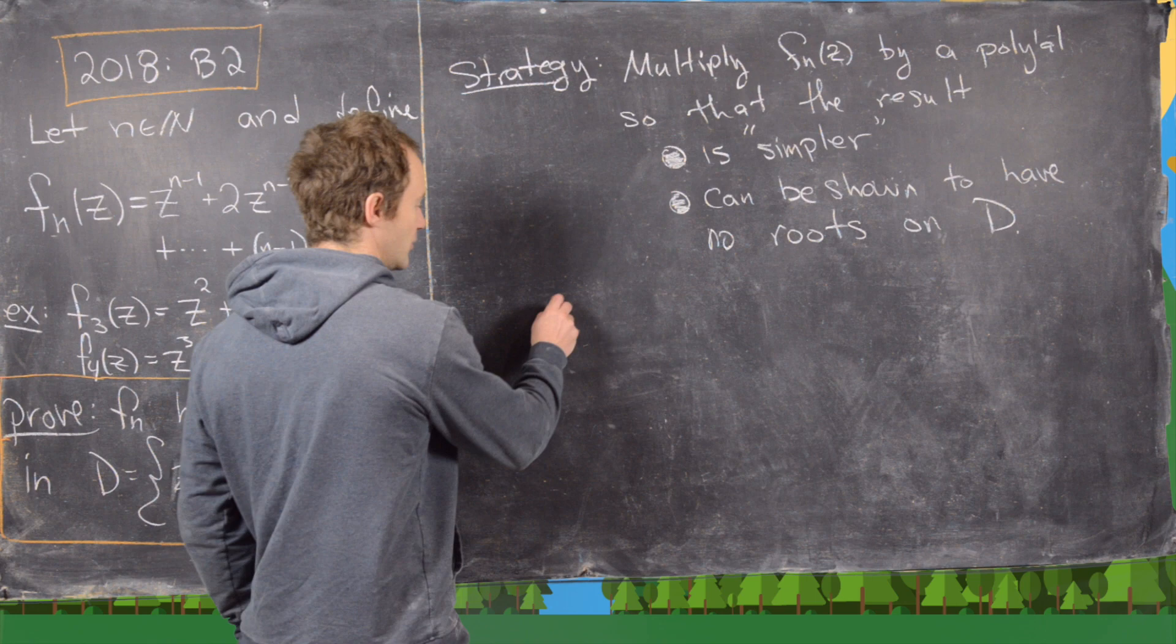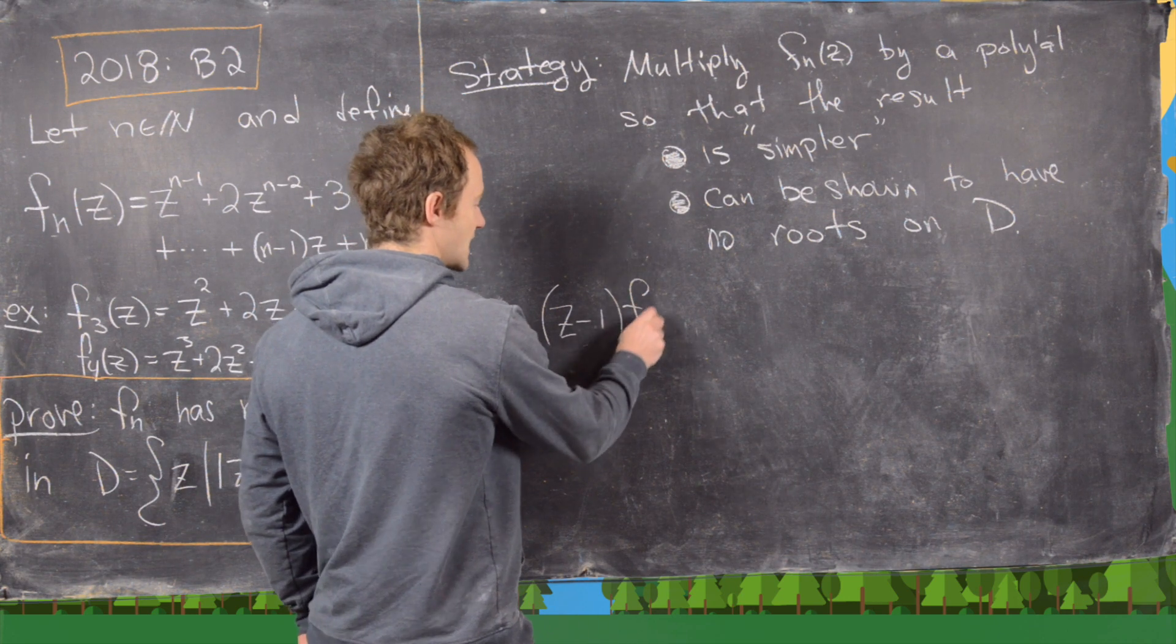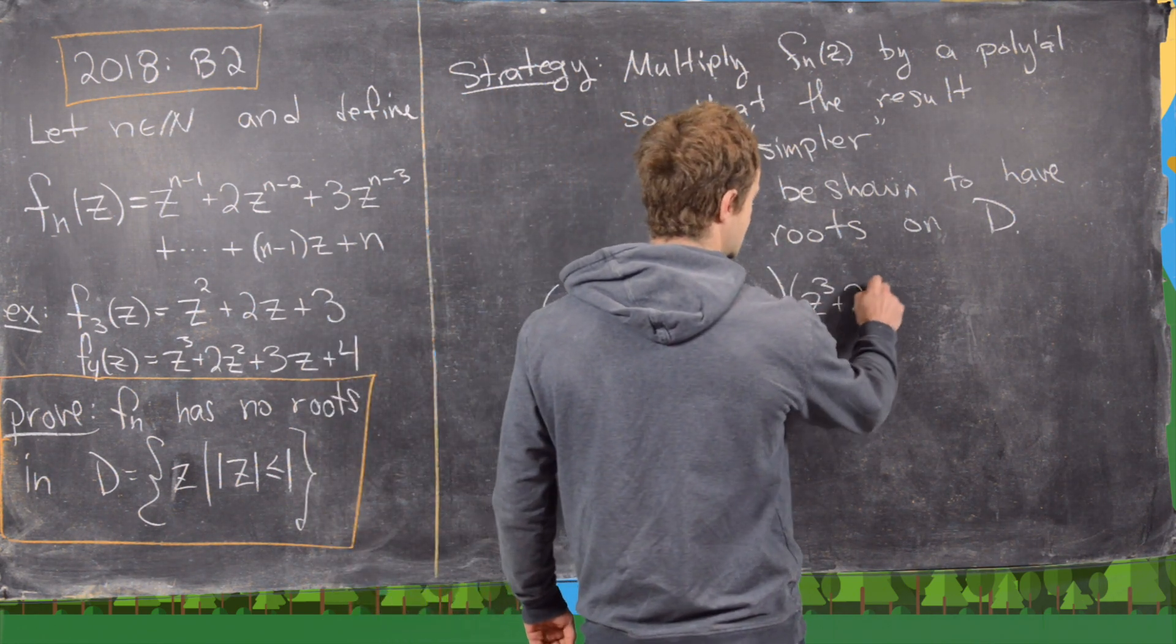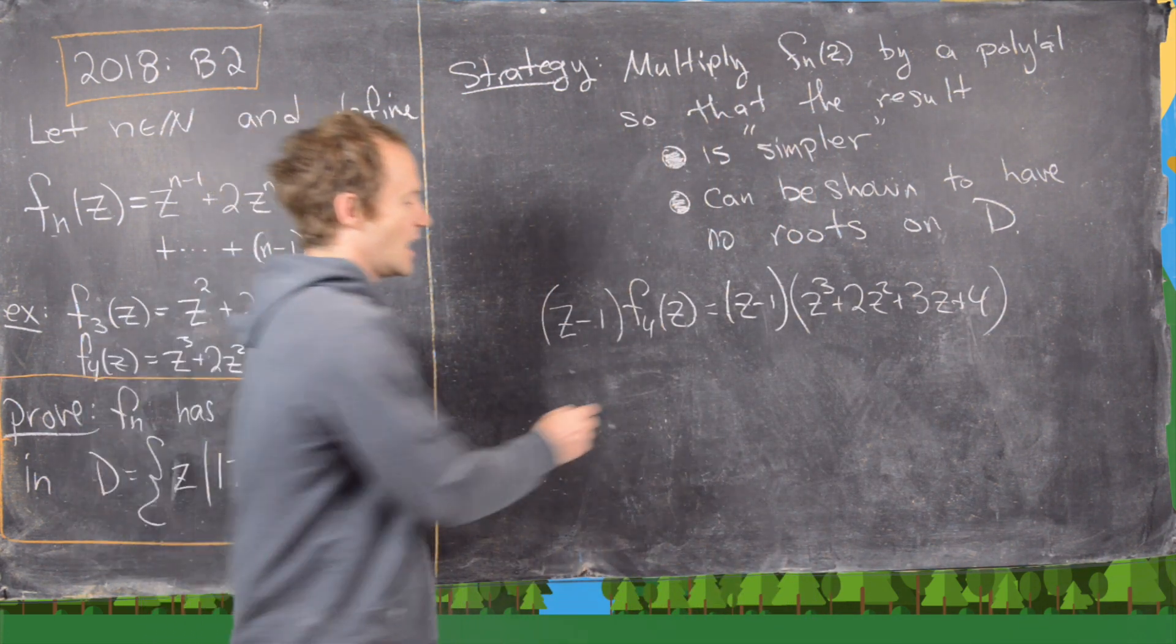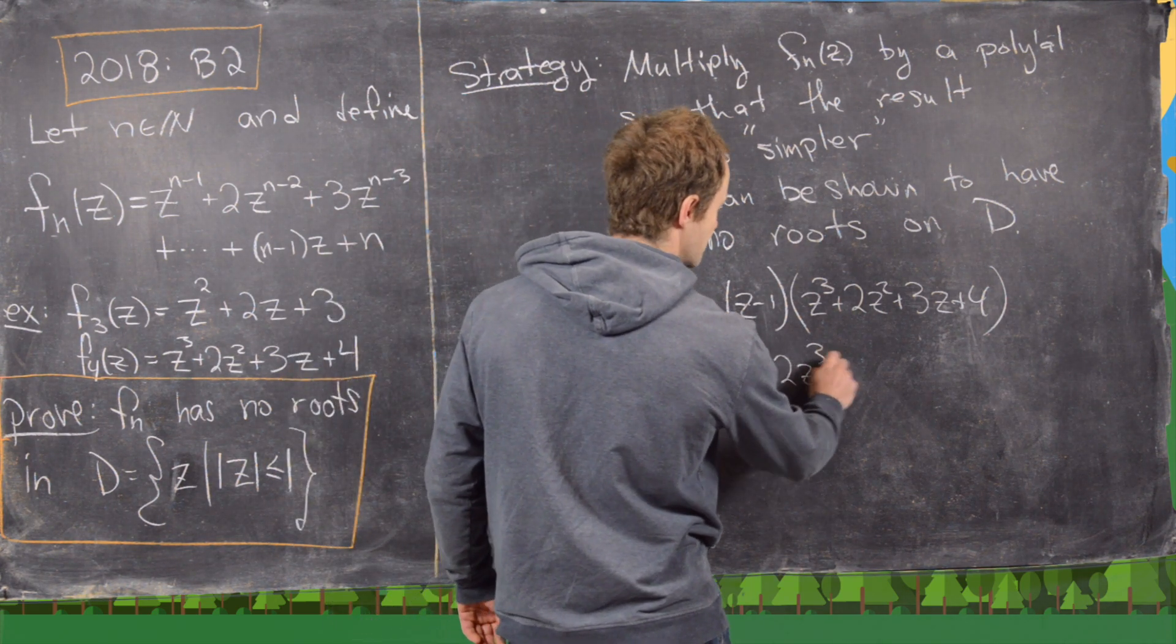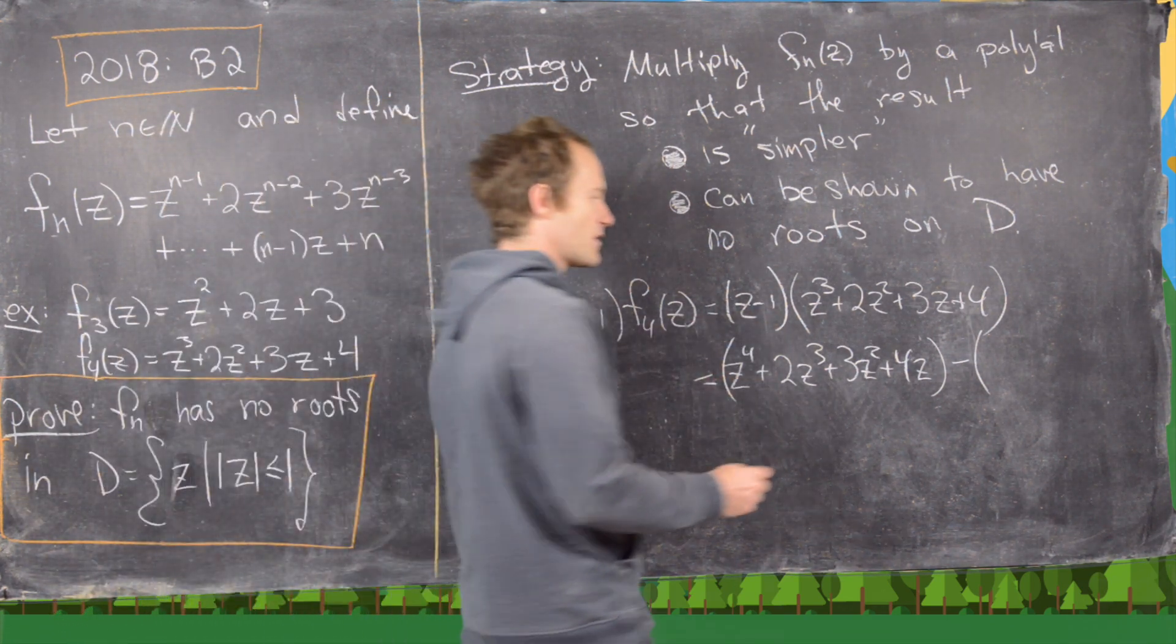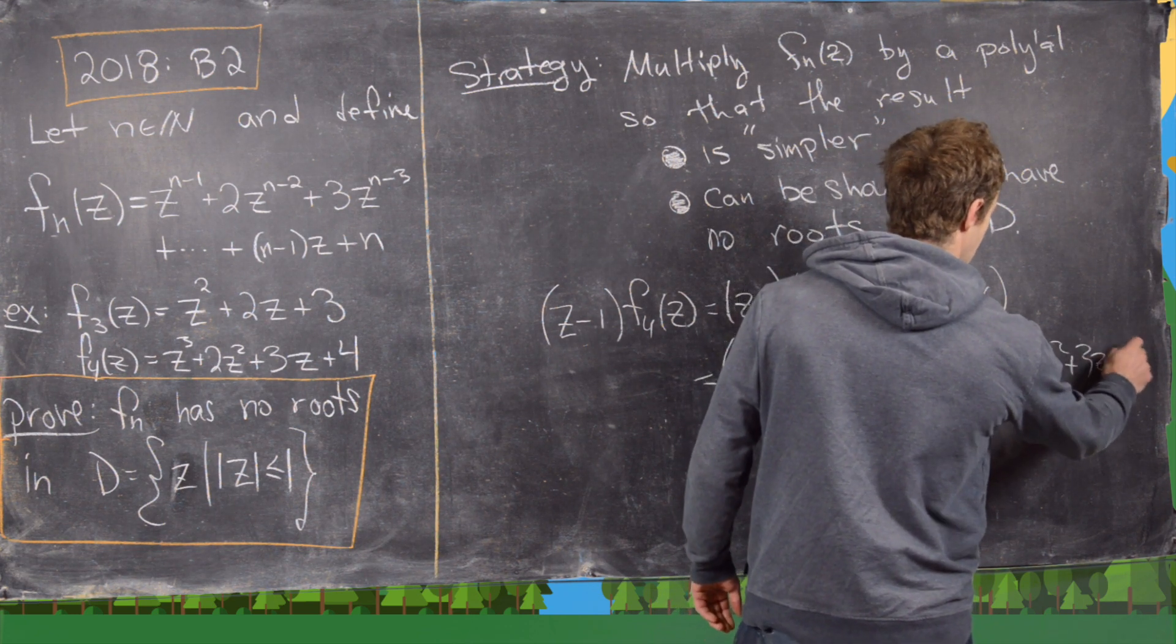And in fact, we can, and that polynomial is z minus 1. Now let's notice that if we multiply z minus 1 by f4(z), that's going to be z minus 1 times z cubed plus 2z squared plus 3z plus 4. But now we can distribute that out and notice that's going to give us z to the fourth plus 2z cubed plus z squared plus 3z squared plus 4z minus, when we multiply that minus 1 through, we get z cubed plus 2z squared plus 3z plus 4.